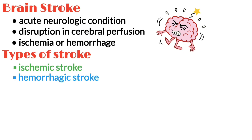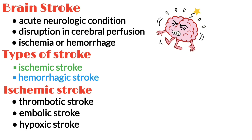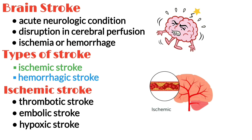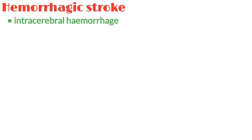The majority are ischemic strokes, and there are three subtypes of ischemic stroke: thrombotic, embolic, and hypoxic strokes, each caused by different mechanisms respectively. A hemorrhagic stroke can be caused by either an intracerebral hemorrhage or a subarachnoid hemorrhage.